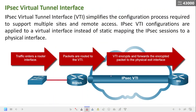Like DMVPNs, the IPsec Virtual Tunnel Interface, or VTI, simplifies the configuration process required to support multiple sites and remote access. IPsec VTI configurations are applied to a virtual interface instead of static mapping the IPsec session to a physical interface. IPsec VTI is capable of sending and receiving both IP unicast and multicast encrypted traffic, so routing protocols are automatically supported without having to configure GRE tunnels.